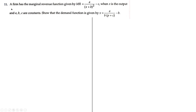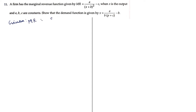Next question: a firm has marginal revenue function MR = a/(x+b)² - c, where x is output and a, b, c are constants. Show that the demand function is x = (a/b)/(p+c) - b. First, find total revenue, then find the demand function. Given MR = a/(x+b)² - c.